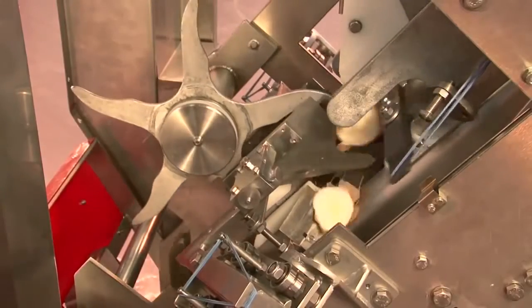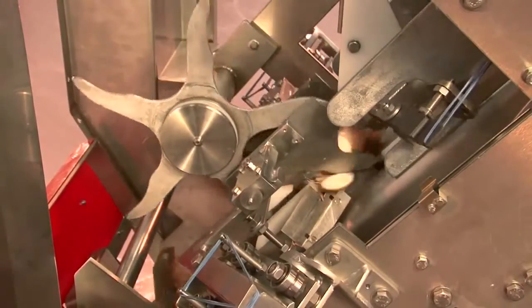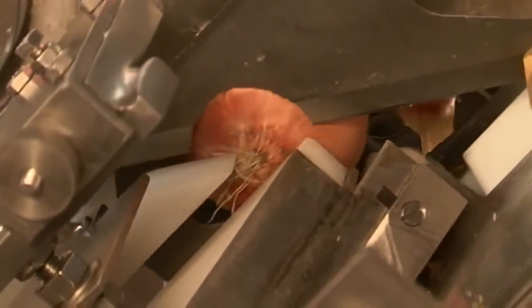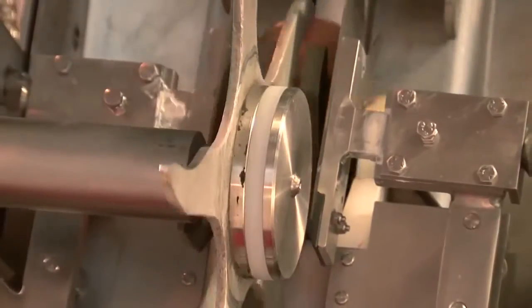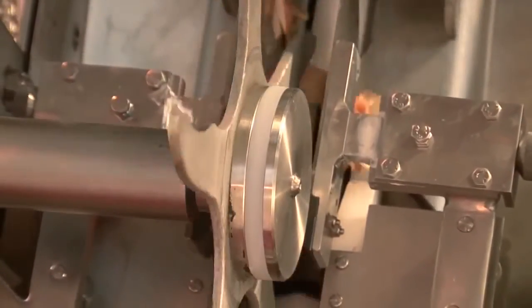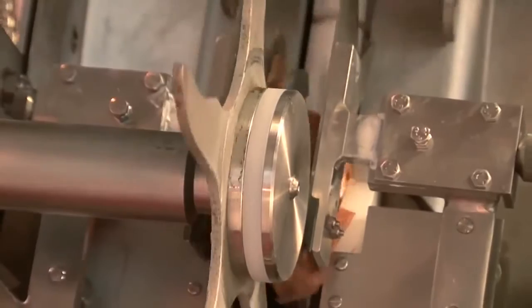Removing the tops and tails is the first operation. Both blades automatically move depending on the size of each individual onion to ensure that the minimum amount is removed, and the feed spider also adjusts to hold the onions in position. The machine will accommodate differences of up to 25mm between minimum and maximum onion sizes.